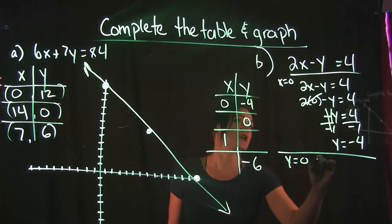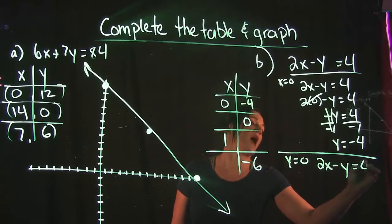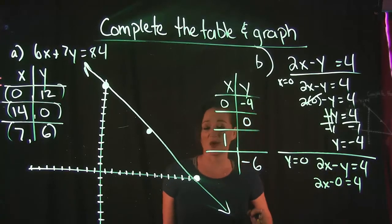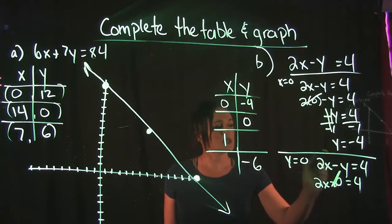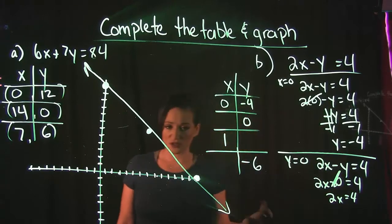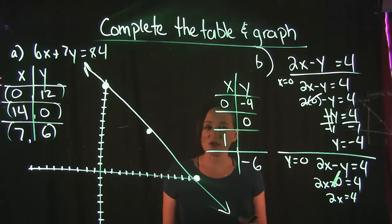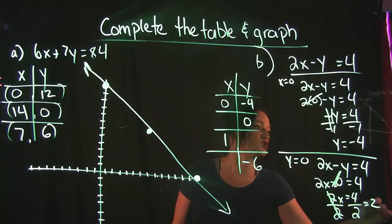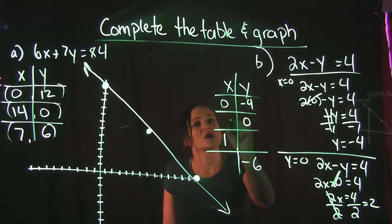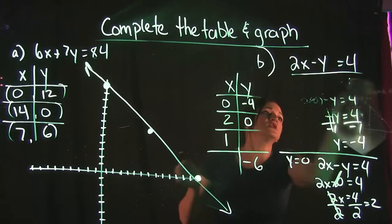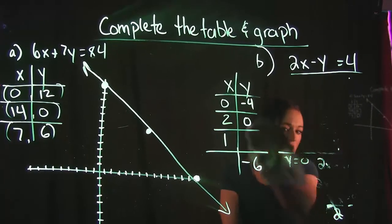Next, we plug in 0 for Y. Taking 2x − y = 4 and substituting 0 for Y, that term goes away leaving us with 2x = 4. Dividing both sides by 2 gives X = 2. So when Y is 0, X is 2.